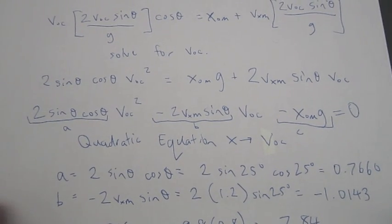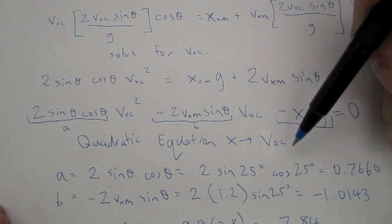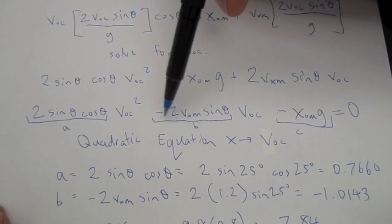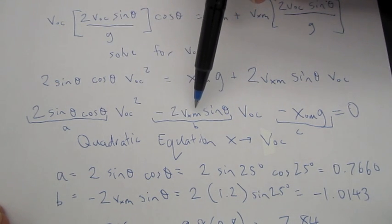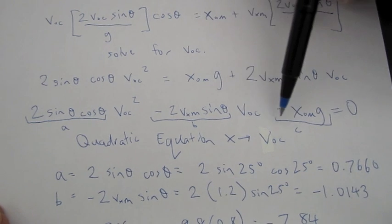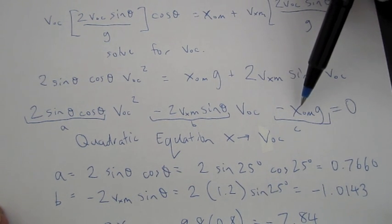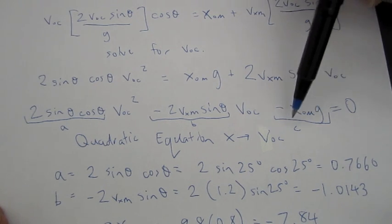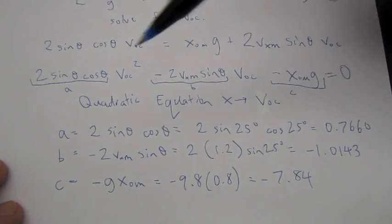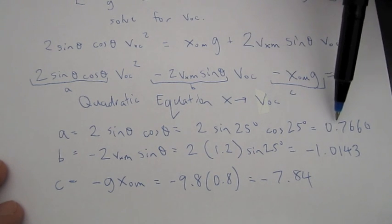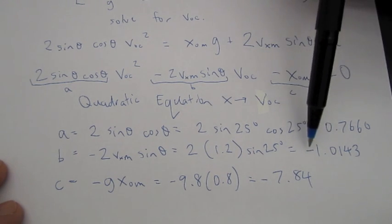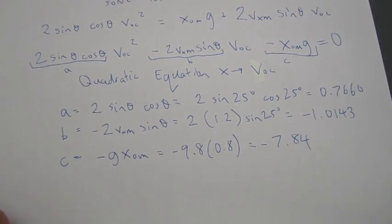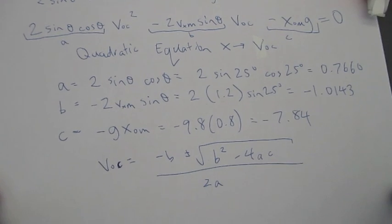Okay, so this is a quadratic equation in V 0 C. The constants are the A is 2 sine theta cos theta, B is the negative 2 V X of the mouse times sine theta, and C is negative X of the mouse times G. And if we work all those numbers out in SI units, we get A is 0.7660, B is negative 1.10143, and C is negative 7.84.